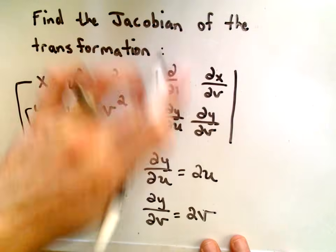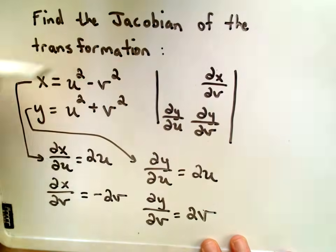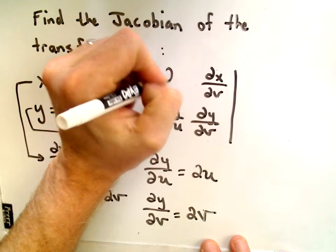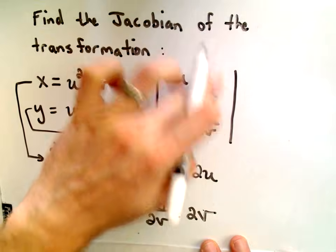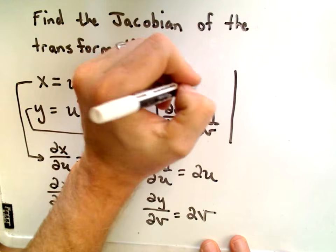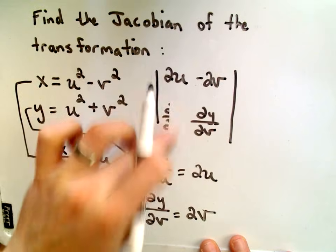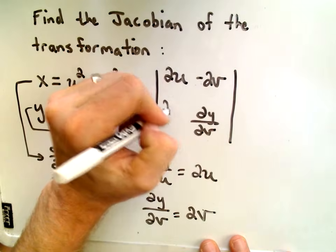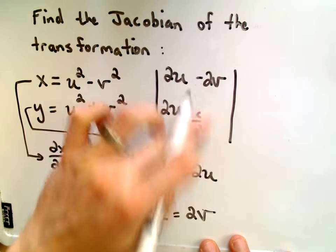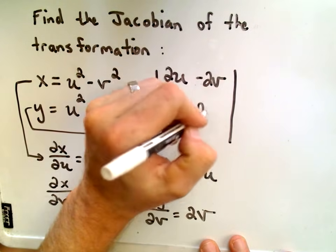So that's all I need to plug in now. We said the partial derivative of x with respect to u, that's 2u. The partial of x with respect to v, that's negative 2v. The partial of y with respect to u, that's 2u. And the partial of y with respect to v, that's 2v.